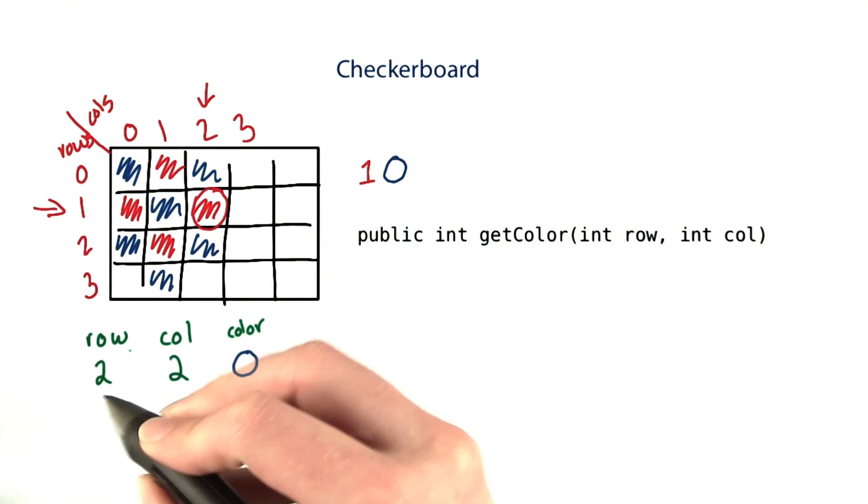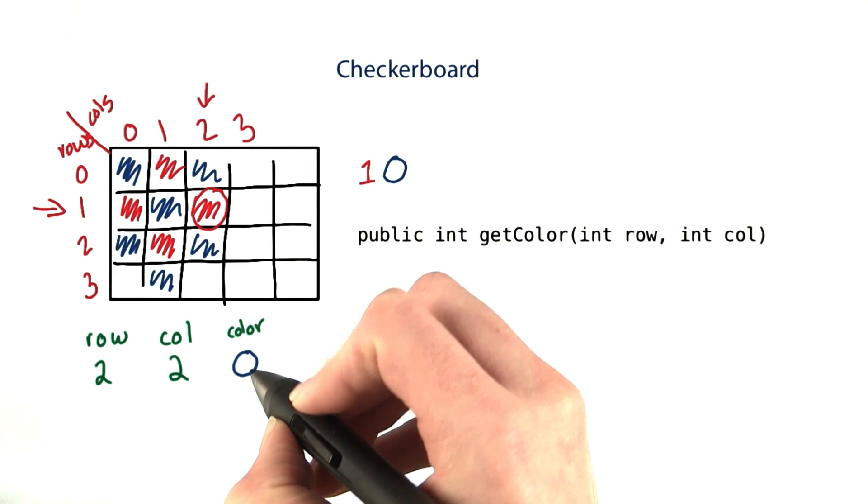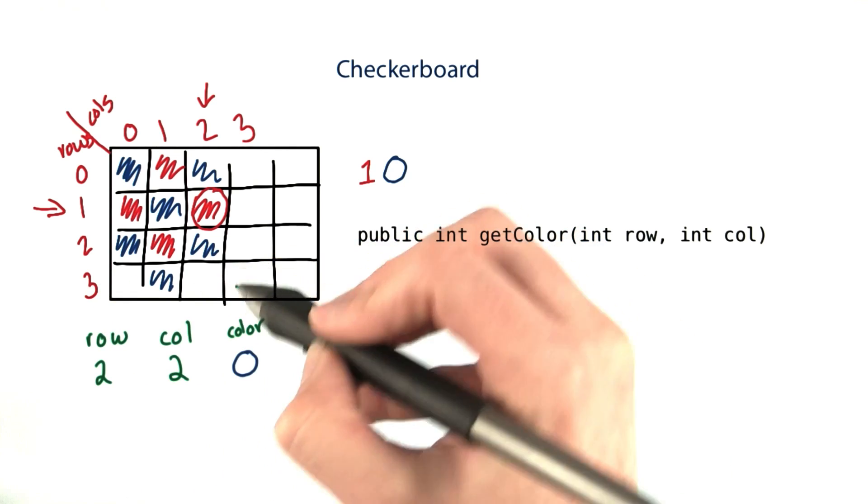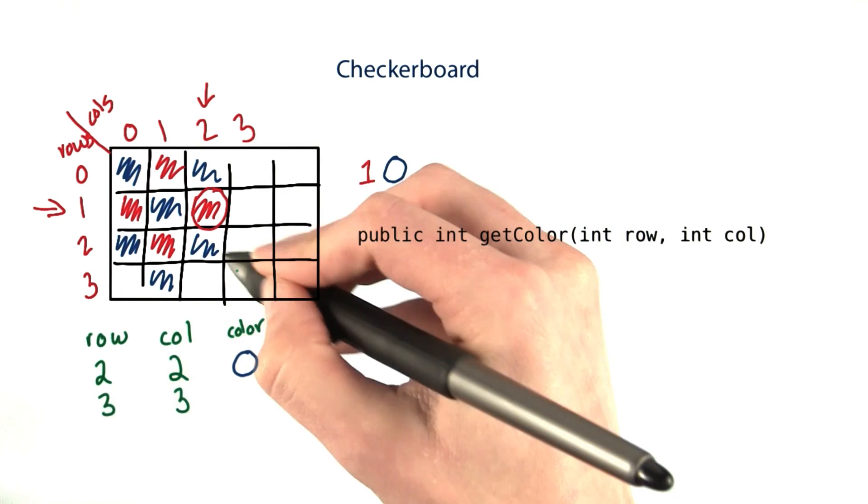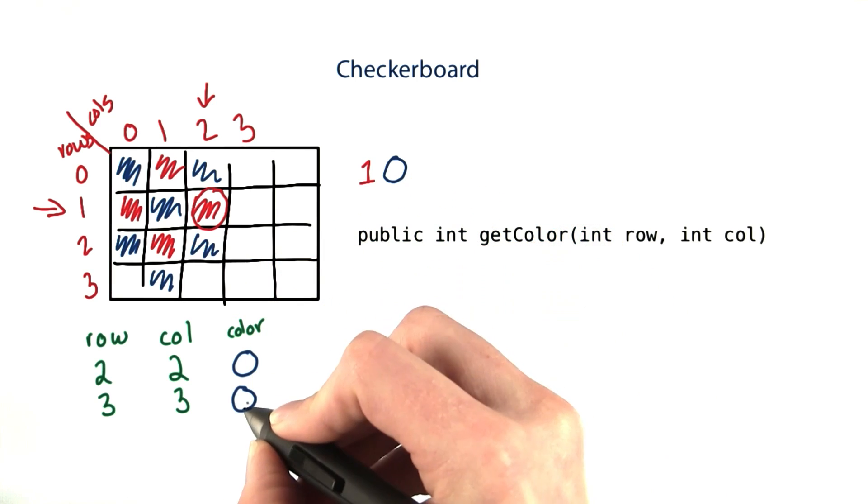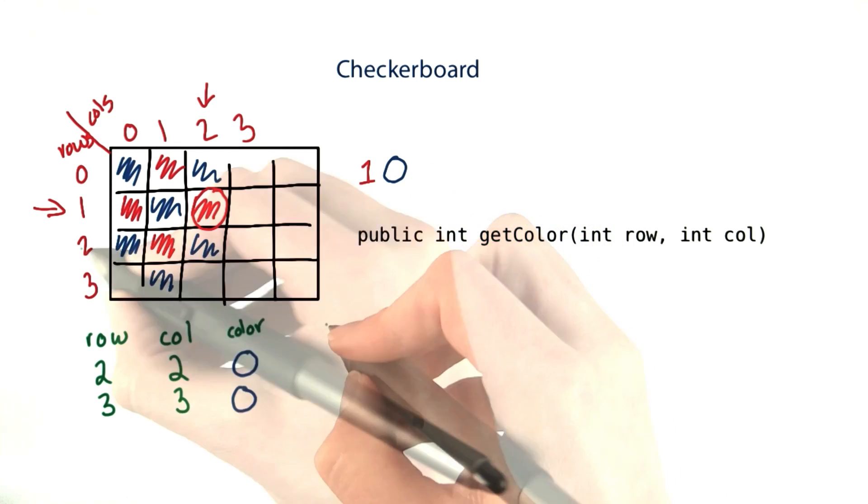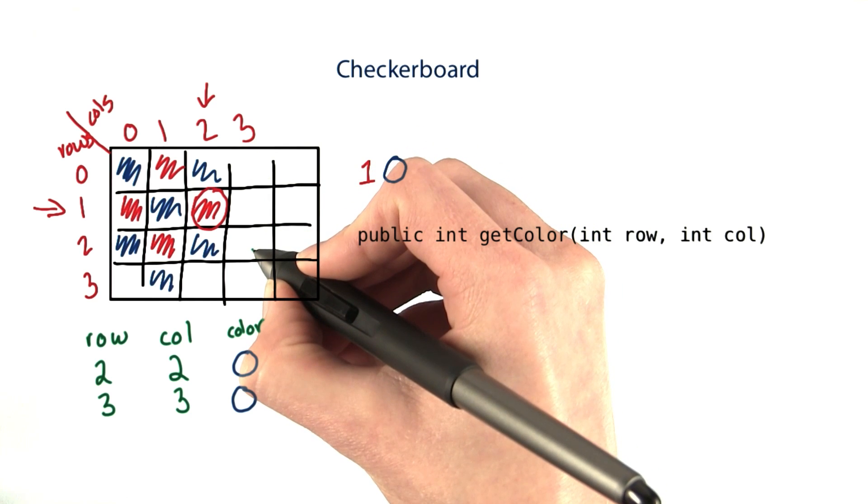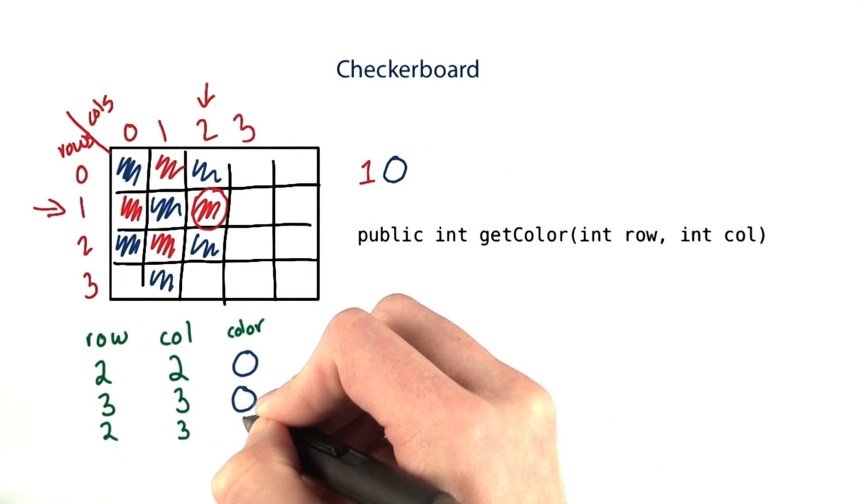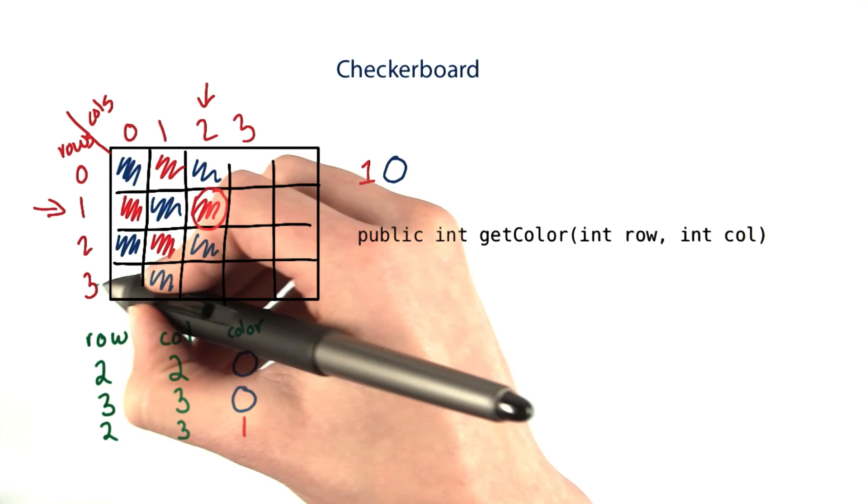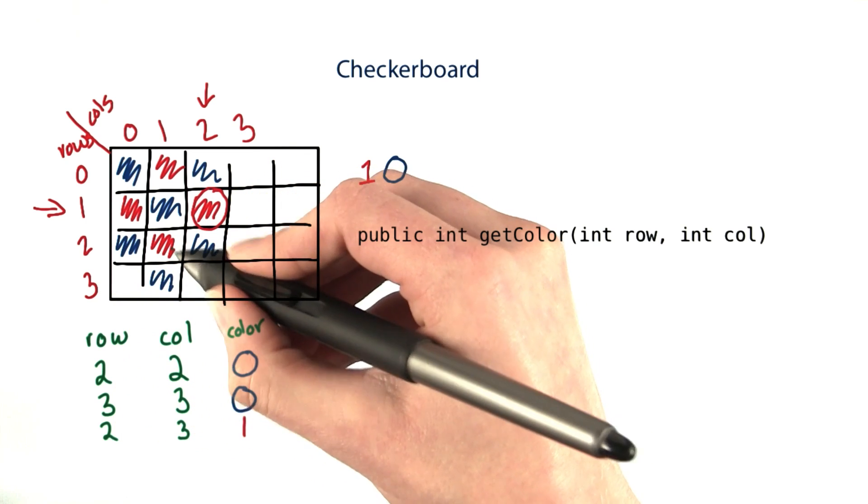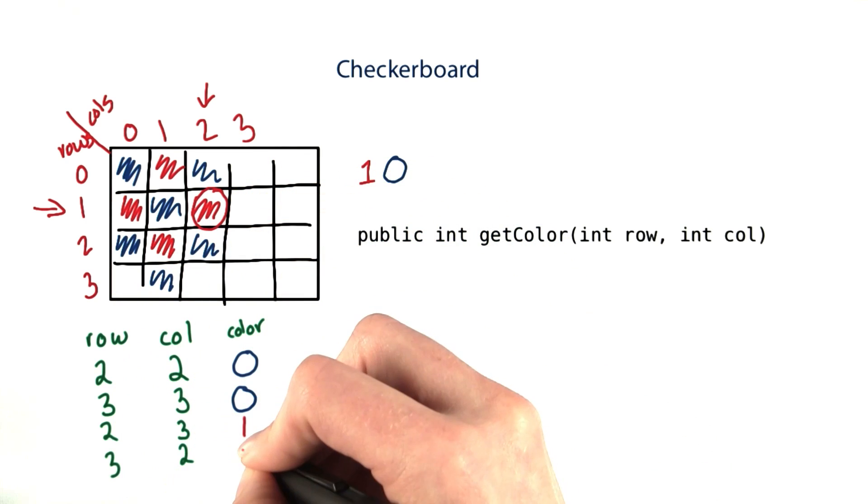So we need an expression that when given 2 and 2 gets 0. The spot 3, 3 should also be blue, so again we need a 0. 2, 3 should be red, so that should be a 1. And 3, 2 should be red, so also 1.